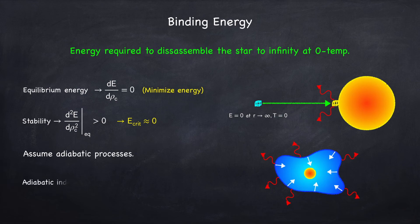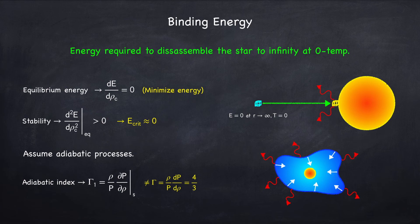We also assumed adiabatic processes. So we made this distinction between gamma 1, which is the adiabatic index, which tells us how the pressure responds to changes in density while keeping the entropy constant, meaning with no heat flow,